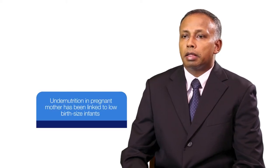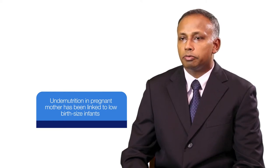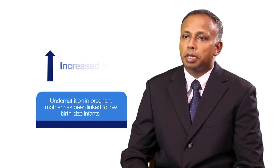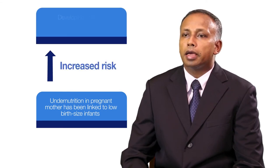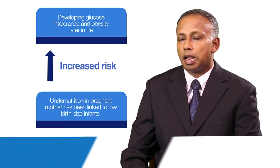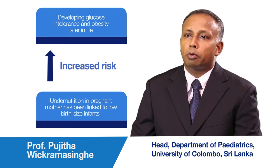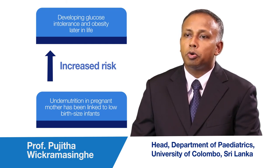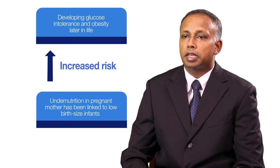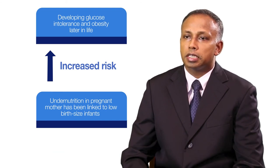One main example of such programming would be where an undernourished mother would give birth to a low birth weight baby, and such a baby would be at a higher risk of developing obesity later in life, and also type 2 diabetes. Therefore, it has been quite clearly shown how early developmental changes, or the programming effect during fetal life, affects the adult onset diseases later in life of the same individual.